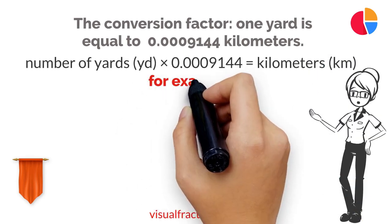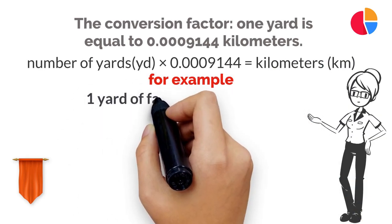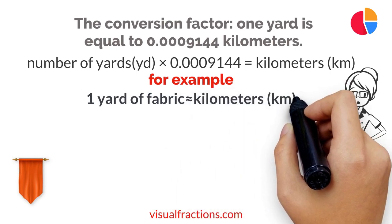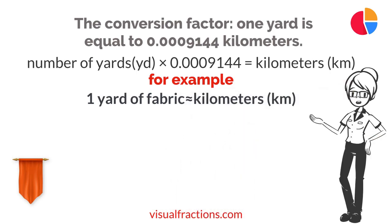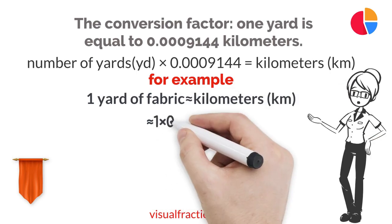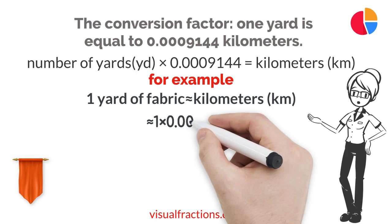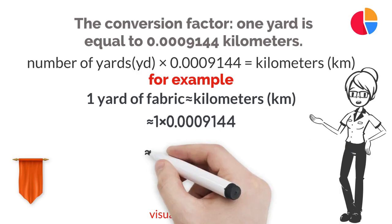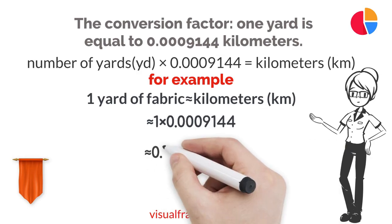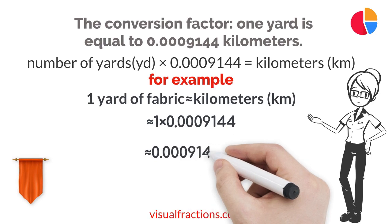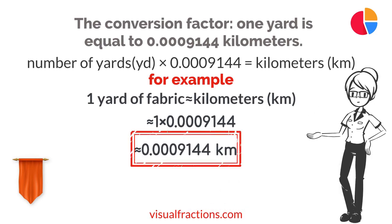Let's walk through an example. Suppose you have 1 yard of fabric that you need to convert to kilometers. We start by multiplying 1 by 0.0009144. This gives us approximately 0.0009144 kilometers.